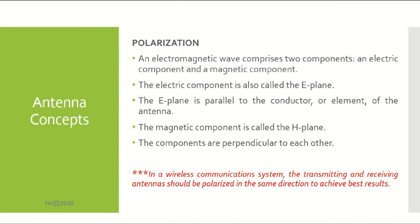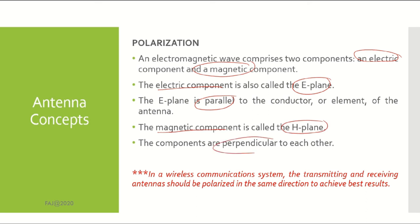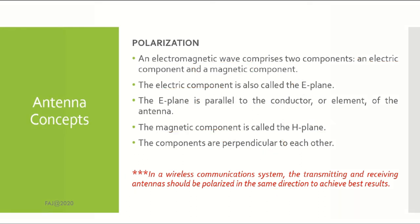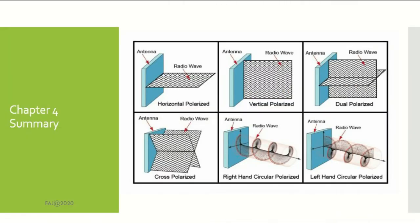Antenna polarization: an electromagnetic wave comprises two components — electric and magnetic. The electric component is also called the E-plane, which is parallel to the conductor or element of the antenna. The magnetic component is called the H-plane. The two components are perpendicular to each other. In a wireless communication system, the transmitting and receiving antennas should be polarized in the same direction to achieve the best results. You can see the pattern for each antenna polarization here.